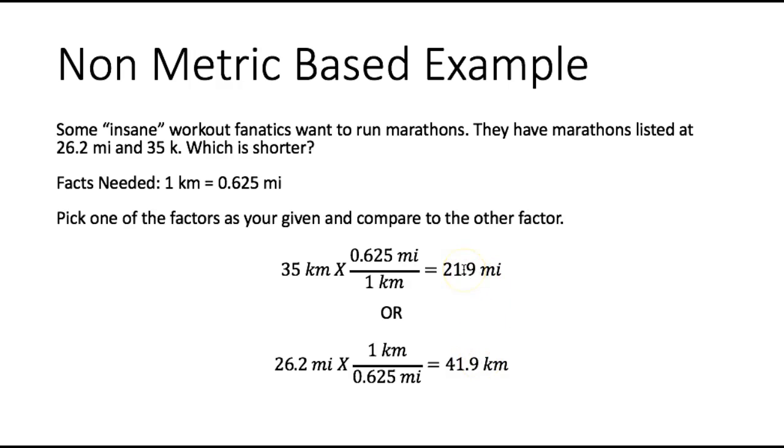Now I need to compare my answers with what I was given in the problem. So a 35 kilometer race is 21.9 miles and that's less than the 26.2 miles of some marathons. I could also compare my answer of 41.9 kilometers with the 35 kilometers. So 41.9 kilometers or 26.2 miles is longer than 35 kilometers or 21.9 miles. So if I was to pick the shorter race I would want to be running in the 35 kilometer race.